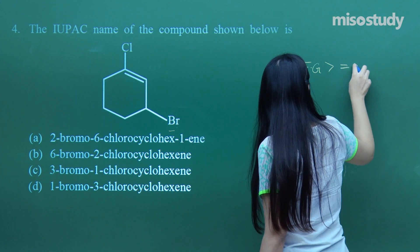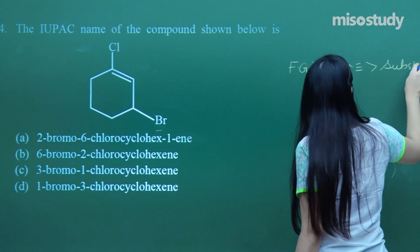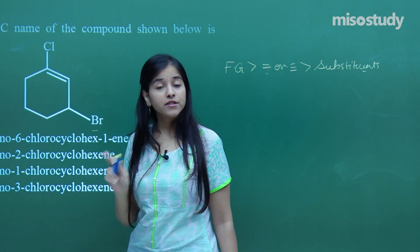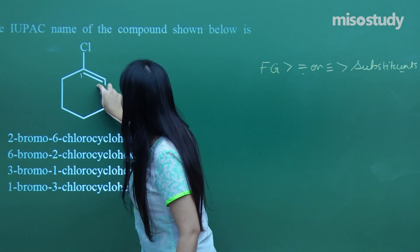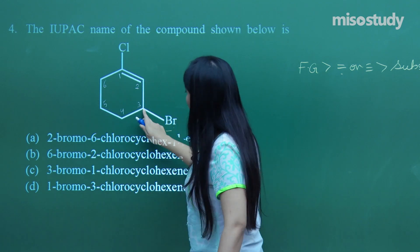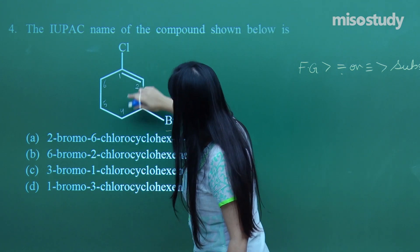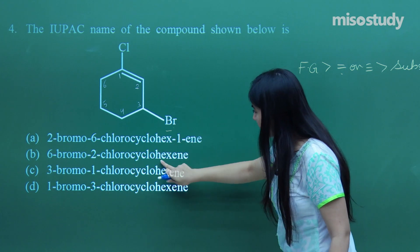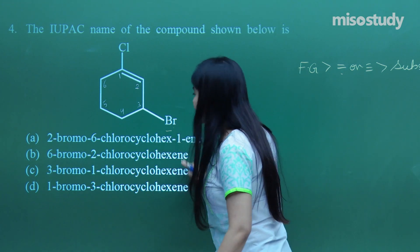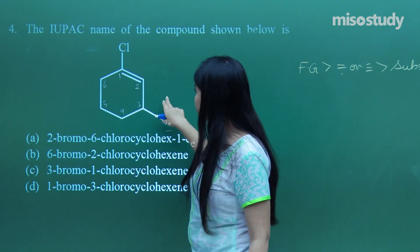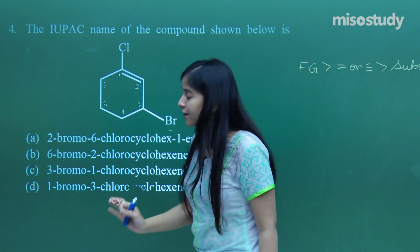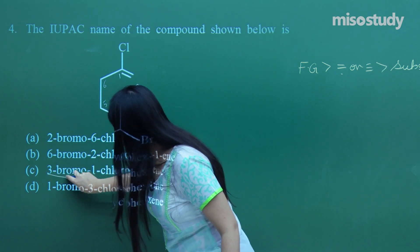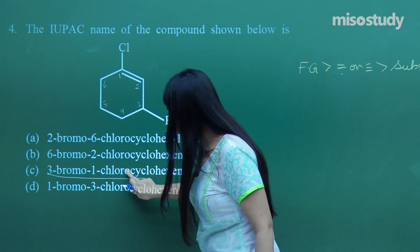The preference order: functional group is always preferred over double or triple bonds, and then comes the turn of substituents. So I will give the double bond the priority, not the substituents. I will give 1 to this carbon, 2, 3, 4, 5 and 6 — not the other way round. So on to the first carbon I will attach the suffix 'ene'. Looking at the options, hexene with 1-ene appears in each option. I have got 1-chloro at position 1 and 3-bromo at position 3, so 3-bromo comes first, then 1-chloro, as per alphabetical order.